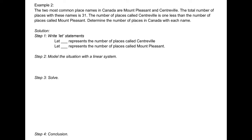Looking at the last sentence to determine our variables: we want to find the number of places called Mount Pleasant, so M represents the number of places called Mount Pleasant. We also need to find the number of places called Centerville, so C represents the number of places called Centerville.